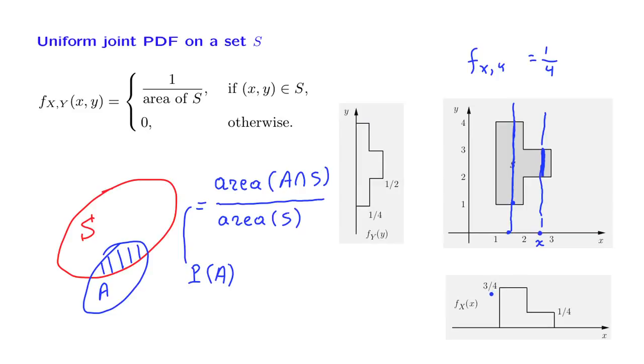There is a similar calculation for the marginal PDF of Y. For any particular value of little y, to find the marginal PDF, we integrate along this line the joint PDF. The joint PDF is 0 out here. It's non-zero only on that interval. And on that interval, it has a value of 1 fourth. And the interval has a length of 1. So the integral is going to end up equal to 1 fourth.